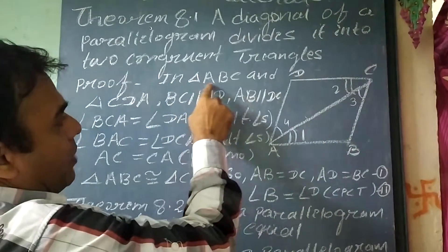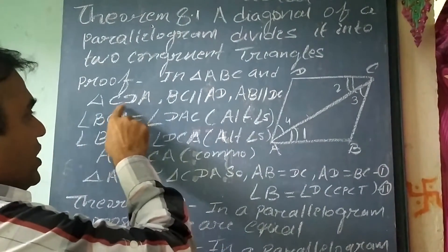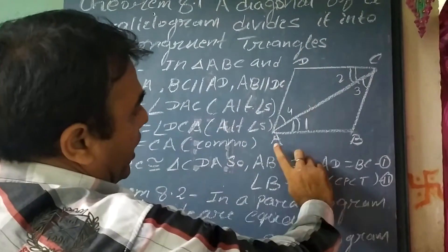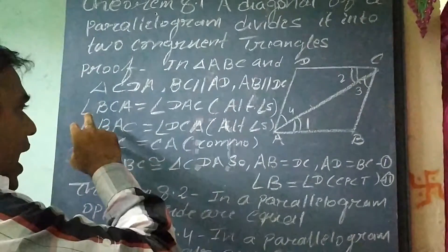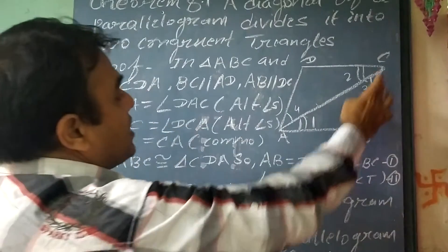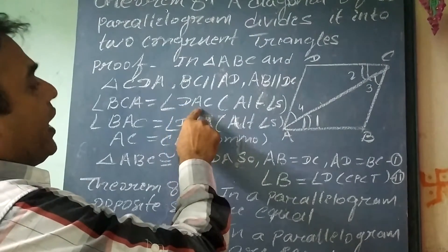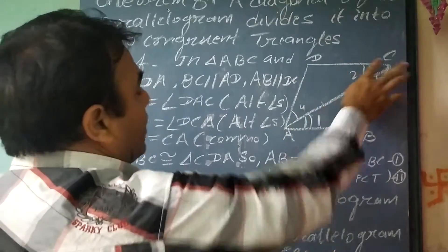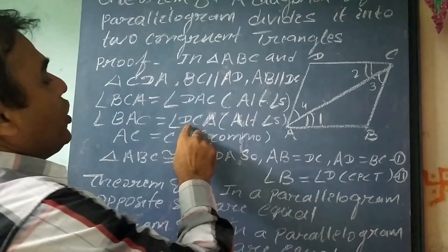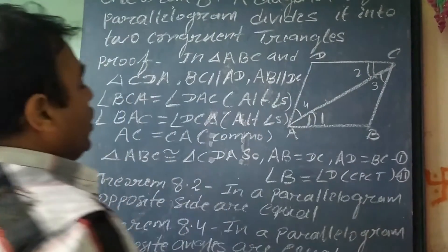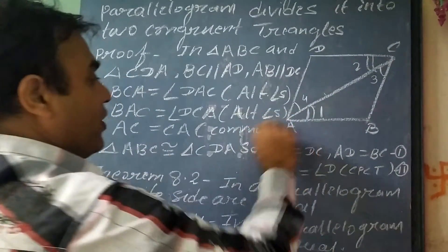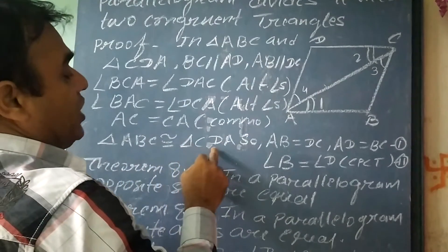In triangle ABC and triangle CDA: BC is parallel to AD, and AB is parallel to DC. And as you can see, angle BCA equals angle DAC, and angle BAC equals angle DCA. And AC equals CA, that is AC is common. So triangle ABC is congruent to triangle CDA.